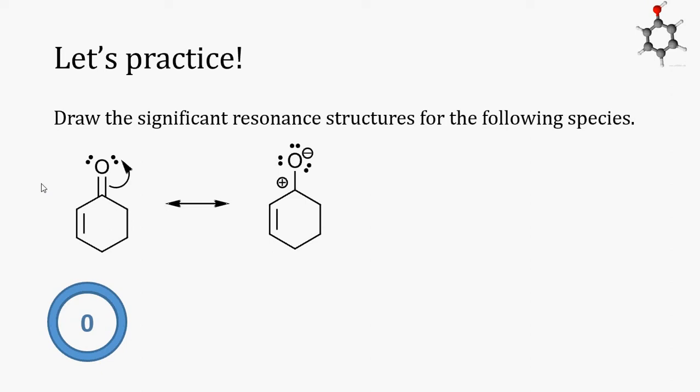Now, on this structure, we have another resonance pattern, a pi bond neighboring a positive charge. We can draw an arrow to show the pair of electrons in the pi bond shifting over a position towards the positive charge.